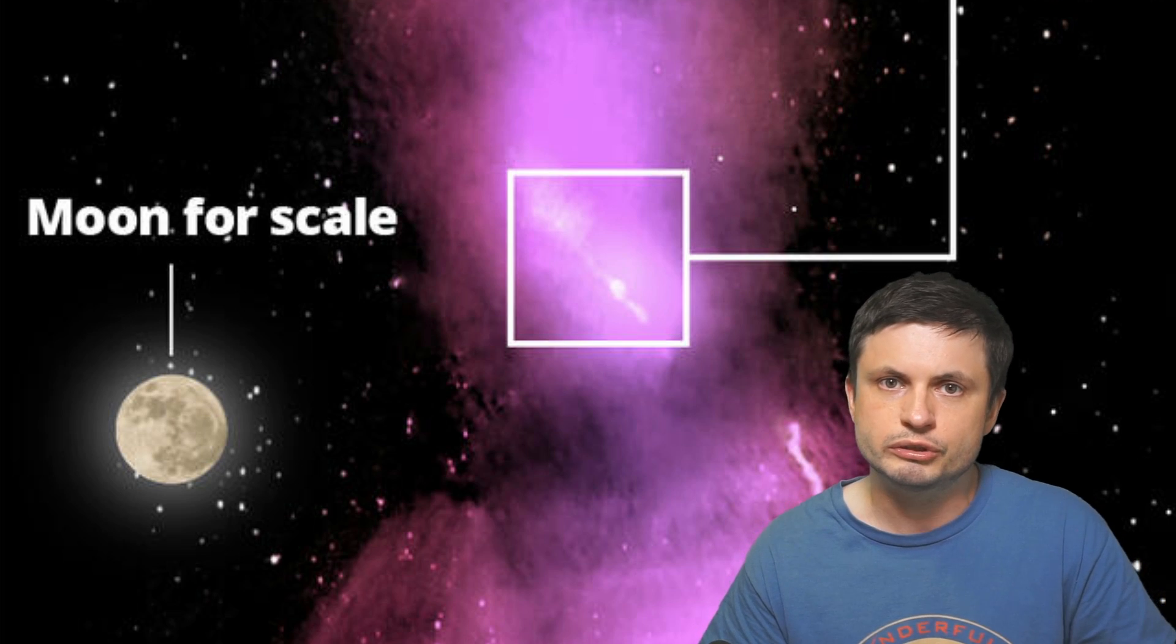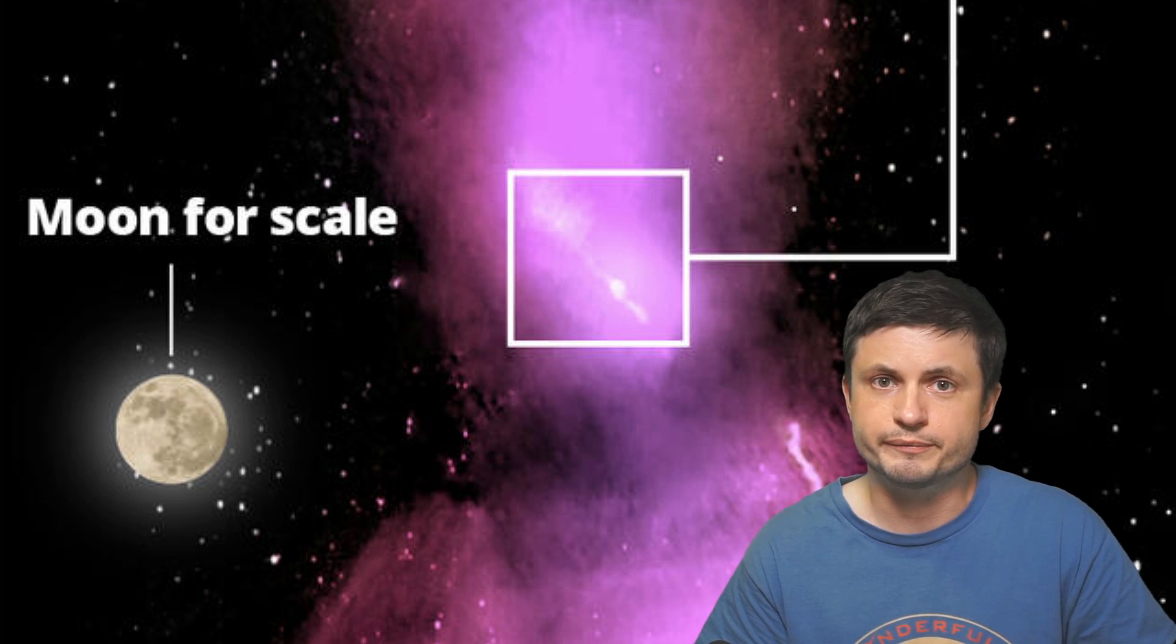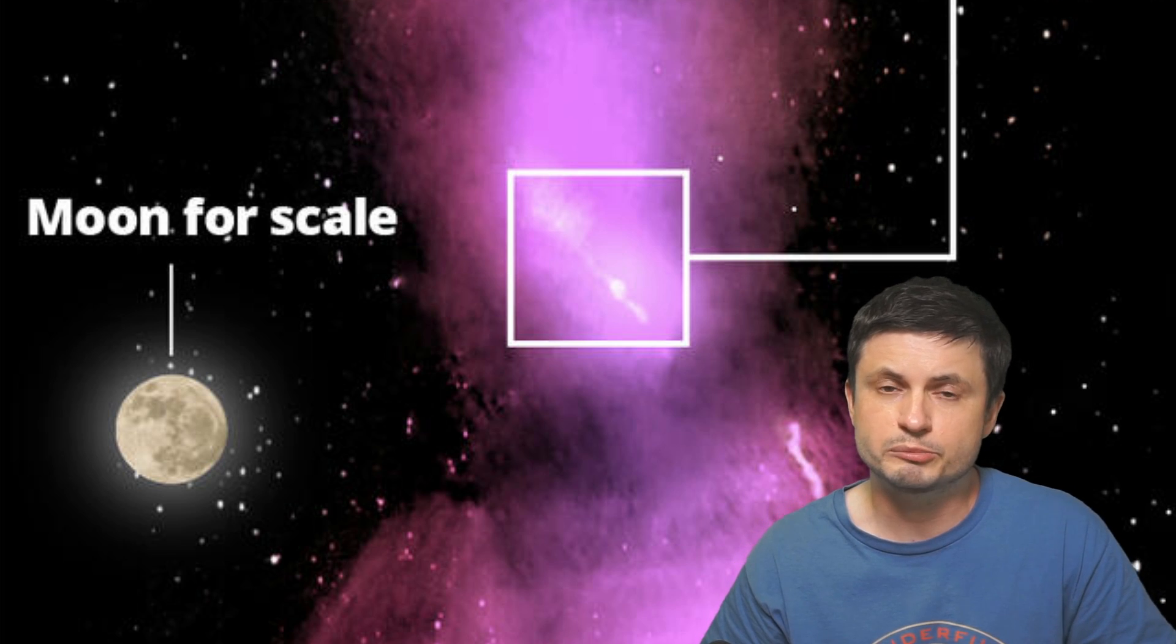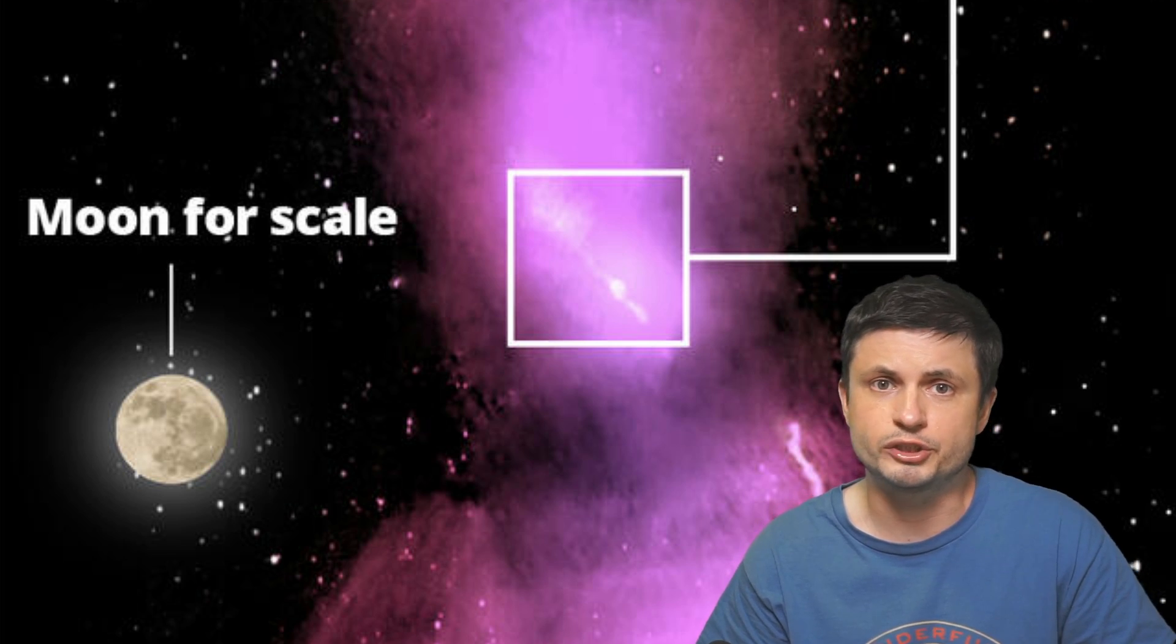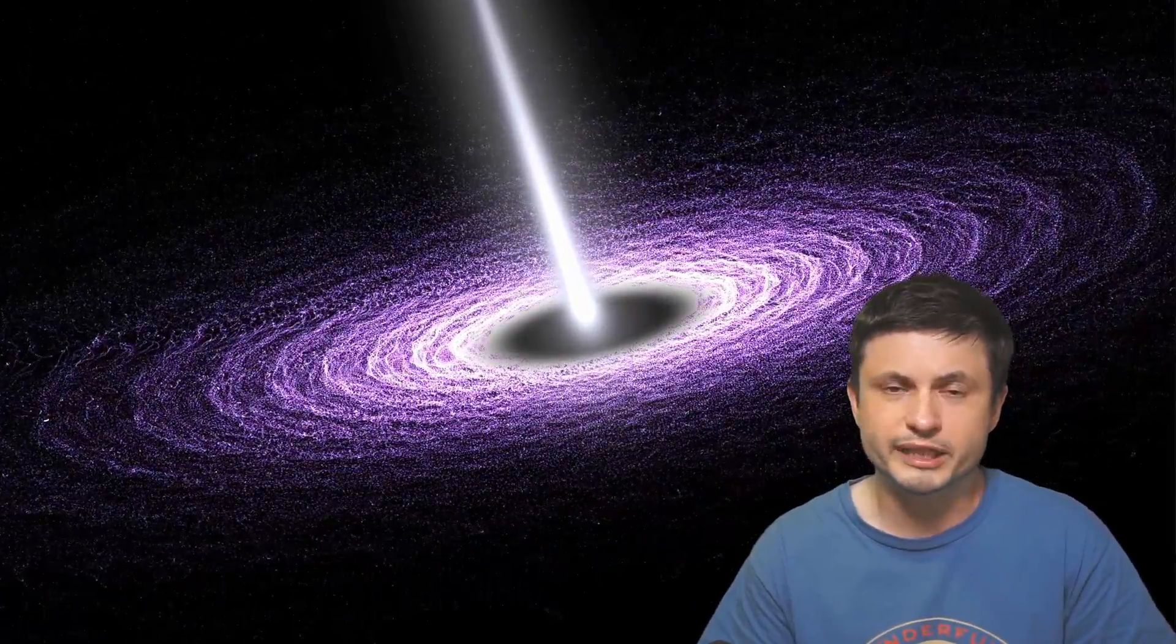But even today the scientists are still not entirely sure what exactly produces these astrophysical jets, and what sort of effects are responsible for causing such tremendous speeds of these particles. But the scientists are certain that it has something to do with the black hole in the middle. For Centaurus A, the black hole is actually really interesting. It's way more massive than the one in the middle of our own galaxy, but way less massive than the one in M87. It's actually right in between. It's about 55 million masses of the sun.